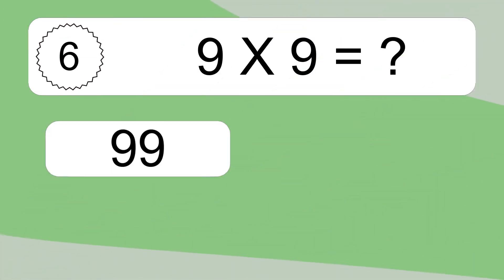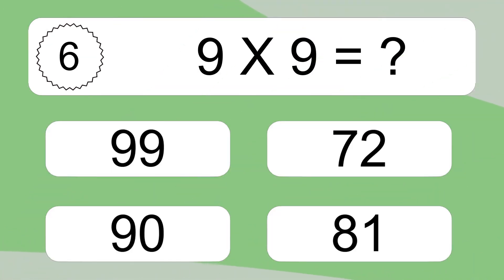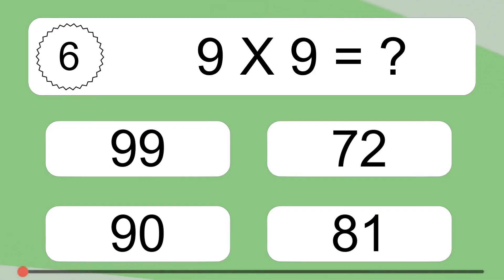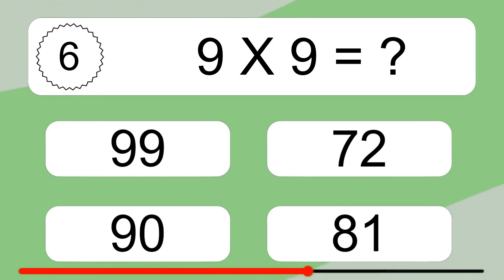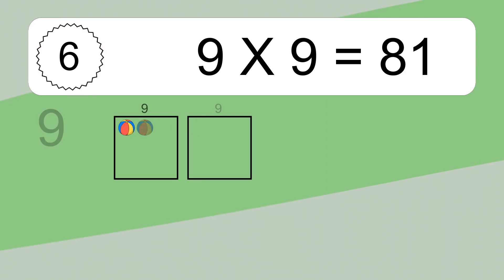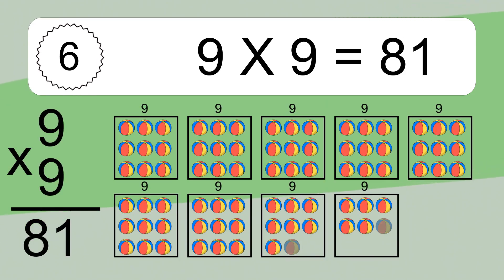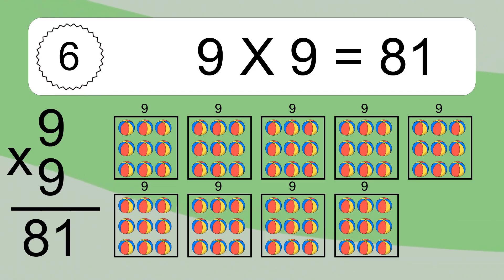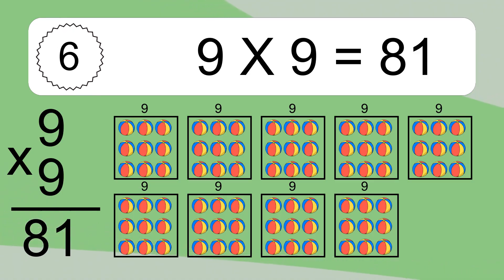9 times 9 equals what? 9 times 9 equals 81. We have 9 boxes, and each box has 9 colorful balls inside. If you count all the balls in all the boxes together, you will have 9 times 9 balls. This equals 81 balls.